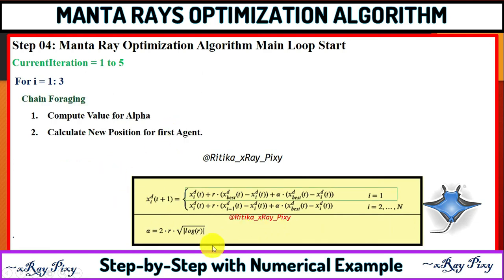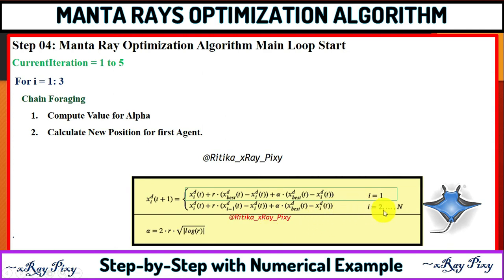To perform chain foraging, first we calculate the value for alpha. After that, we update the value for the first search agent using this equation — you can see the updated value for the first search agent. Then we update the remaining agents (i = 2 to N) using the corresponding equation.